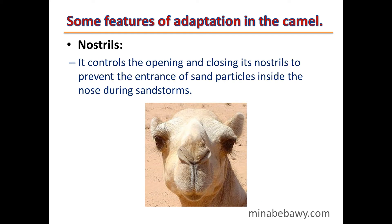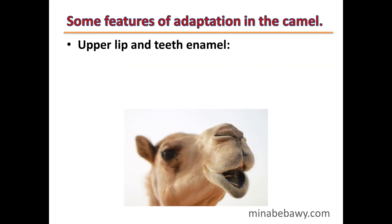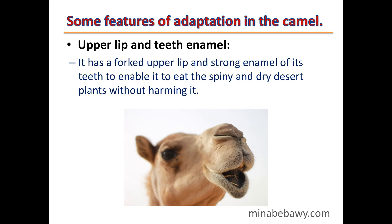The camel controls the opening and closing of its nostrils to prevent sand particles from entering the nose during sandstorms. It has a forked upper lip and strong tooth enamel to enable it to eat spiny and dried desert plants without being harmed.